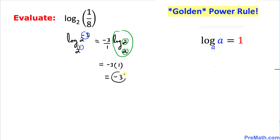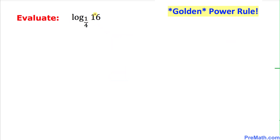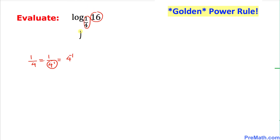Here is our final question: log of 16 with base 1/4. We can tweak this — 16 could be written as 4 power 2. For 1/4: since 1/4 is 1 over 4 power 1, moving it to the top gives 4 power negative 1. So we write log of 4 power 2 with base 4 power negative 1.